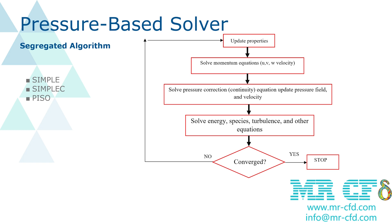The segregated algorithm solves the velocity components separately based on initial or updated pressure and velocity values. The corrected pressure is then calculated, and new velocity and pressure fields are computed from the corrected pressure. The energy equation, turbulence, and other equations are then solved. If the problem converges, the solution ends; otherwise, the previous pressure and velocity values are replaced with the new ones and the process repeats until convergence.